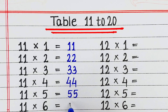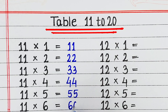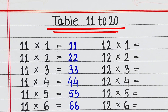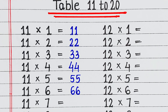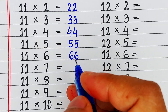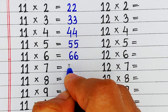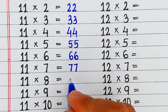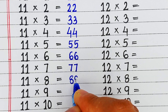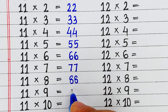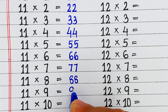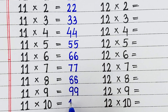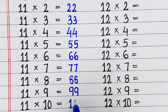First one is table of 11. 11 1s are 11, 11 2s are 22, 11 3s are 33, 11 4s are 44, 11 5s are 55, 11 6s are 66, 11 7s are 77, 11 8s are 88, 11 9s are 99, 11 10s are 110.